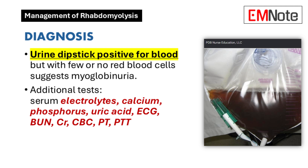An electrocardiogram should be obtained if hyperkalemia is suspected. Serum creatinine and blood urea nitrogen levels are necessary to assess for acute kidney injury. Disseminated intravascular coagulation is a potential complication, so a complete blood count and coagulation studies may be warranted.